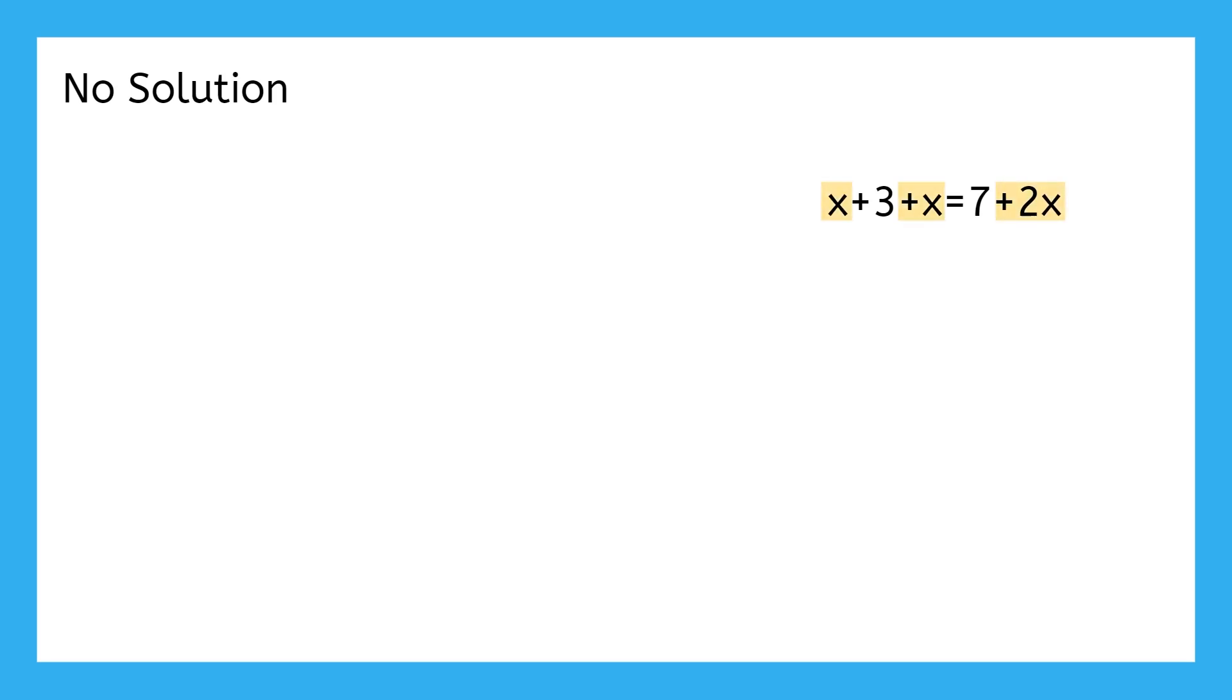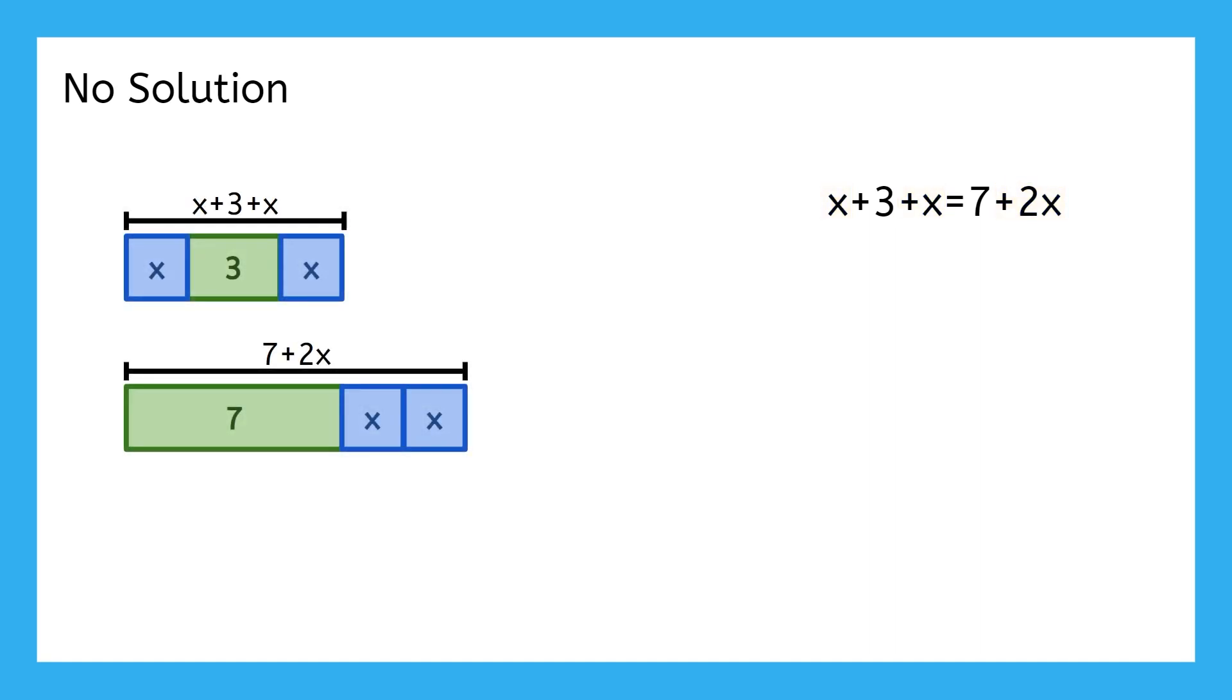There are two x's on each side. The difference here is that the constants do not match. We can see this by representing the expressions on each side visually and rearranging them to match up the constant boxes and the variable boxes. See how the variables match up, but the constants do not?